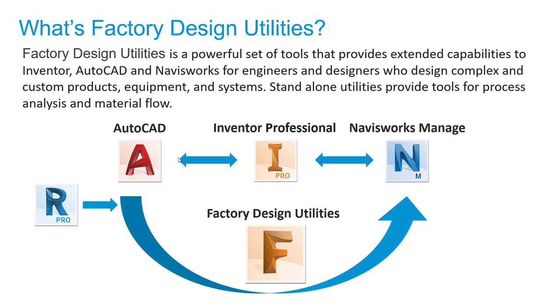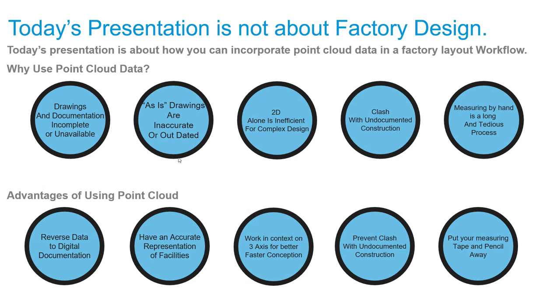The factory design utilities link together: AutoCAD for 2D and architectural work, Autodesk Inventor Professional for 3D parametric design, and Navisworks for model coordination. These are a set of tools that synchronize the three software together, and I'll be feeding Recap point cloud information into this workflow to do our facility layout.